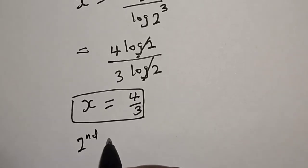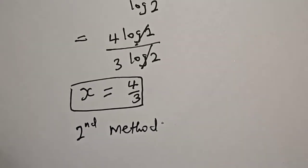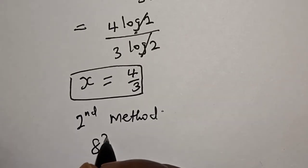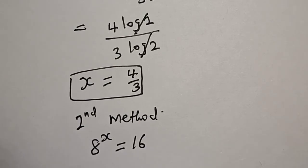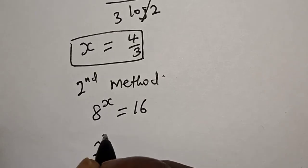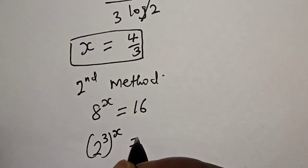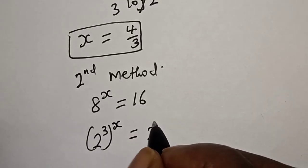Second method. We have 8 raised to power x is equal to 16. Then, 8 raised to power x can be written as 2 raised to power 3 to the power of x is equal to 16 is 2 raised to power 4.